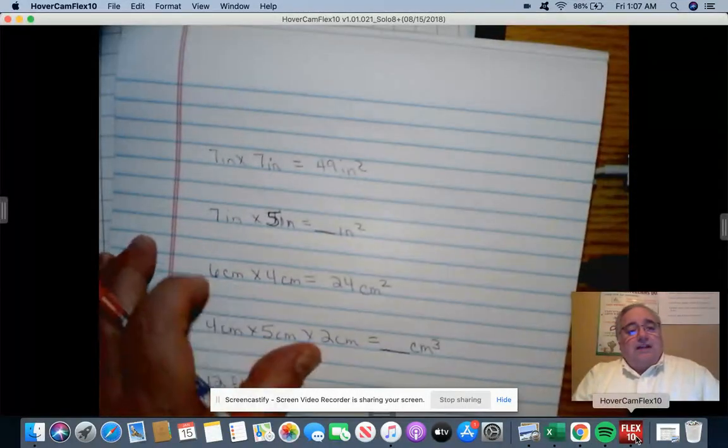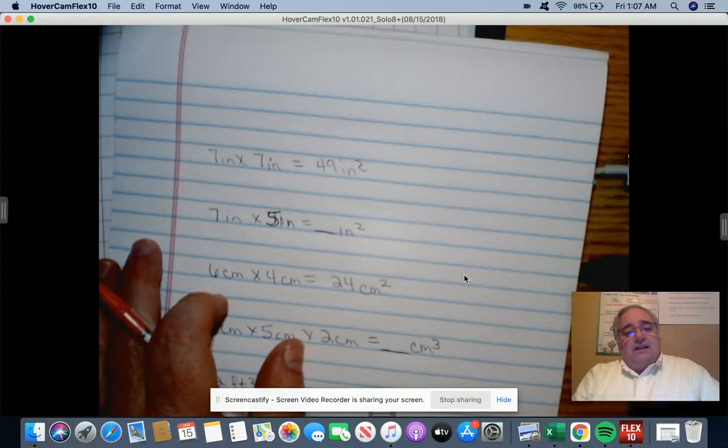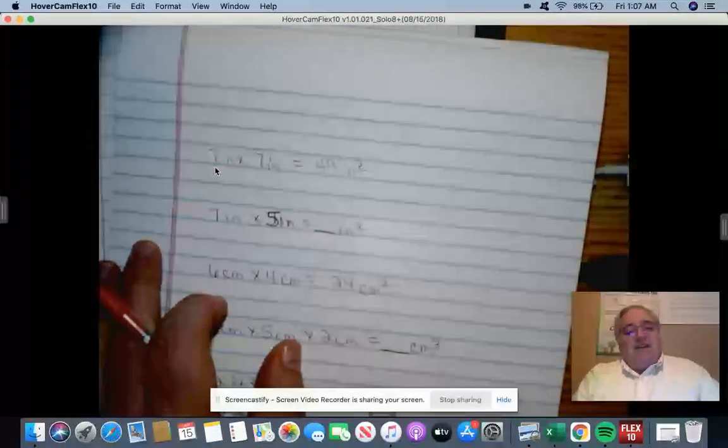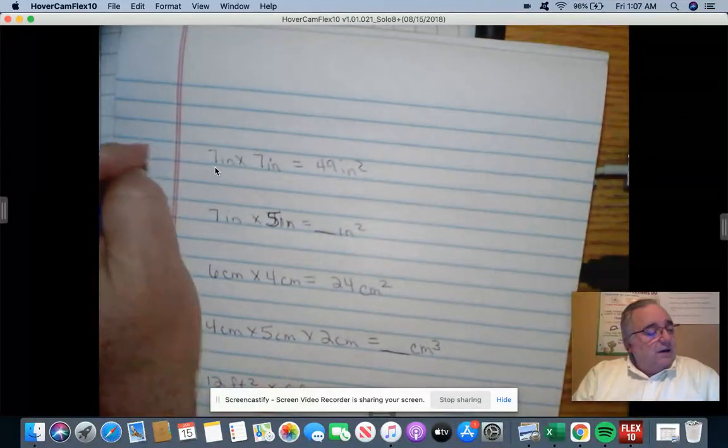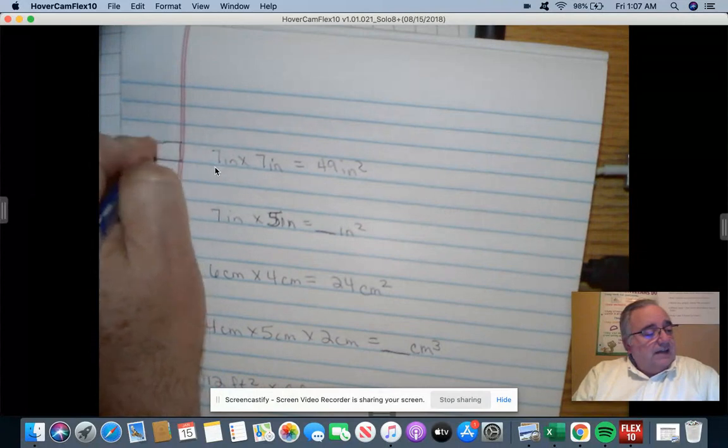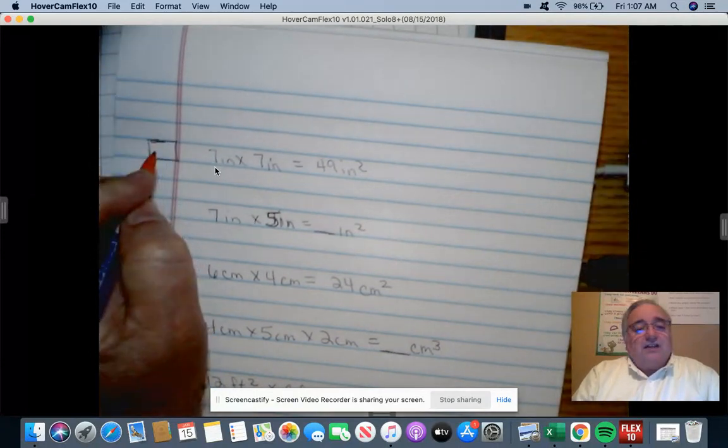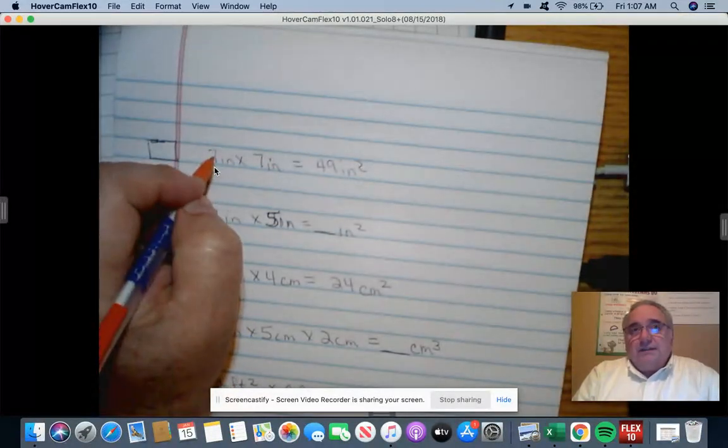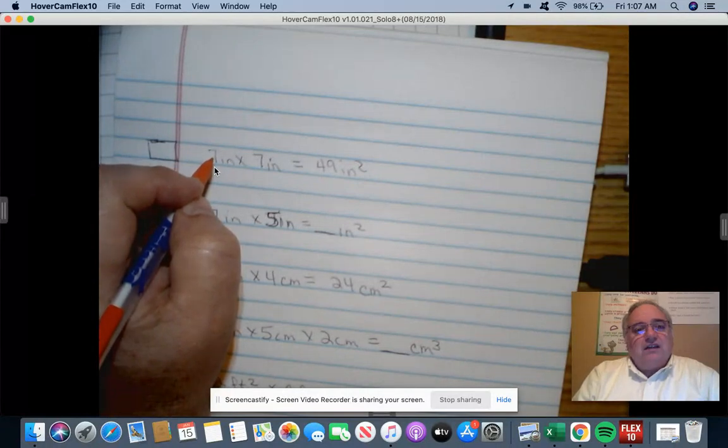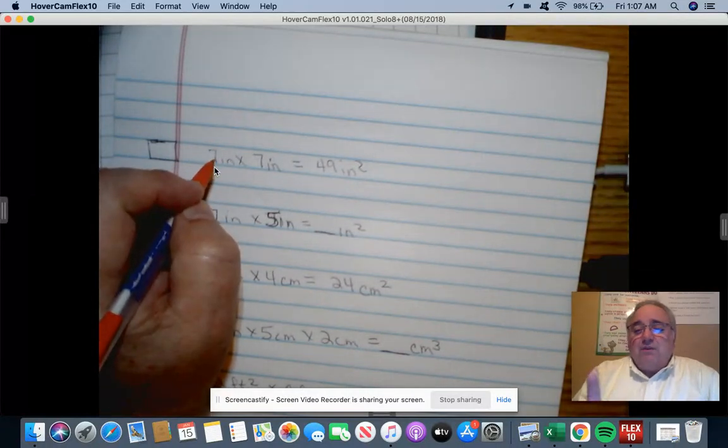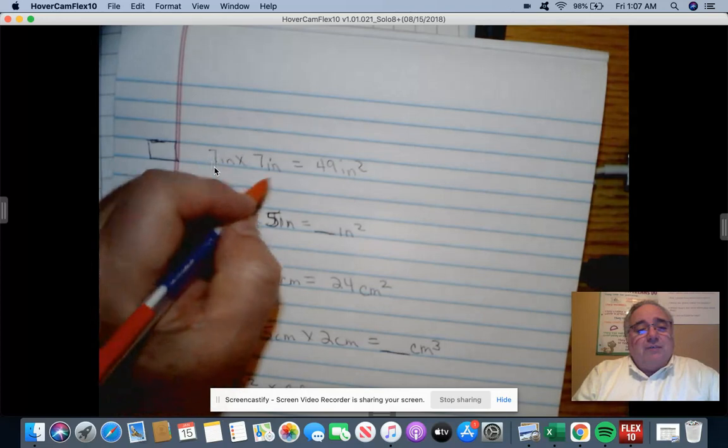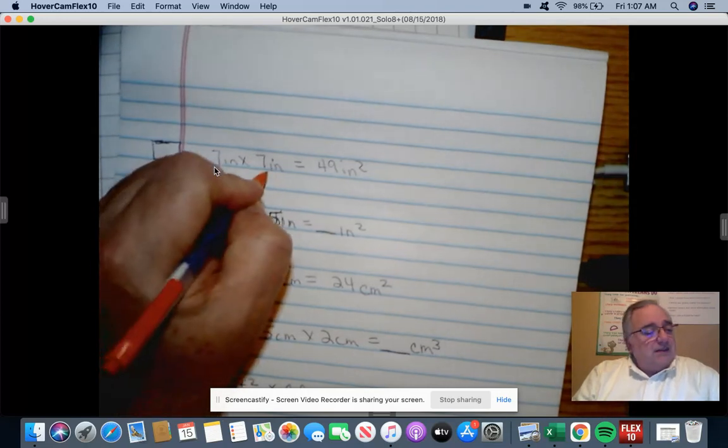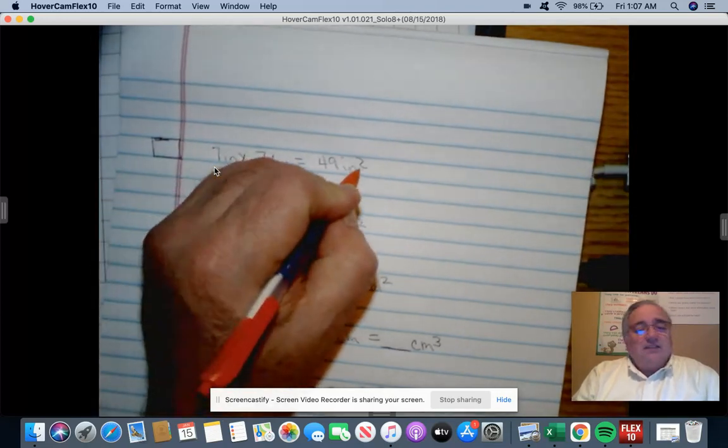We have seven inches at a square, and yesterday you guys reminded me that a square has equal sides. I know that the area is the length times the width. That's part of the volume. Remember that, length times width. That's seven times seven equals 49 inches squared.